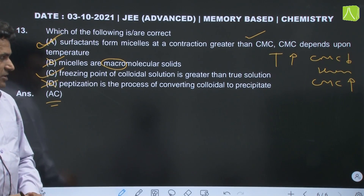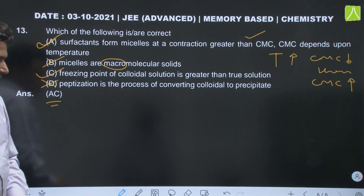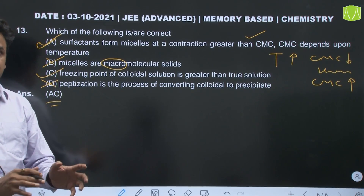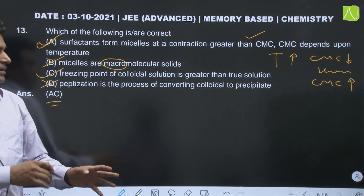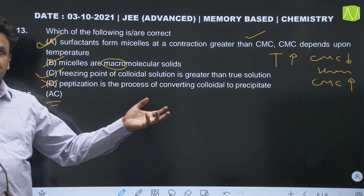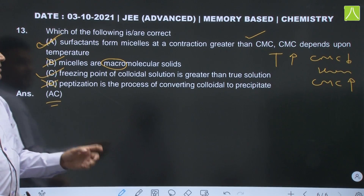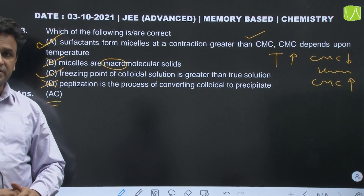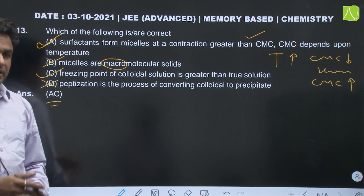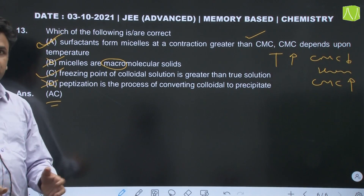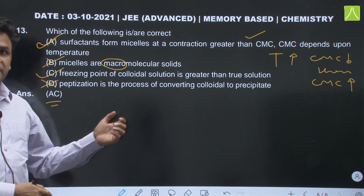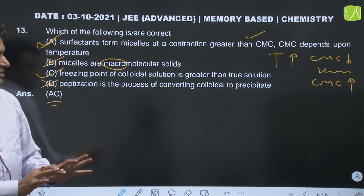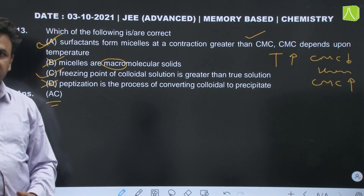So these were three questions for this session. Till now we have reproduced almost nine questions from organic chemistry and 13 questions from physical and inorganic chemistry. We are working hard to collect the rest of the questions from JEE Advanced 2021 paper. This is all for this session. Thank you.